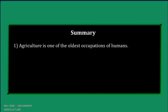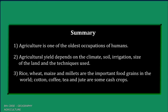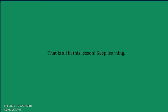Agriculture is one of the oldest occupations of humans. Agricultural yield depends on the climate, soil, irrigation, size of land, and the techniques used. Rice, wheat, maize, and millets are the important food grains in the world. Cotton, coffee, tea, and jute are some of the major cash crops. That is all in this lesson. Keep learning!